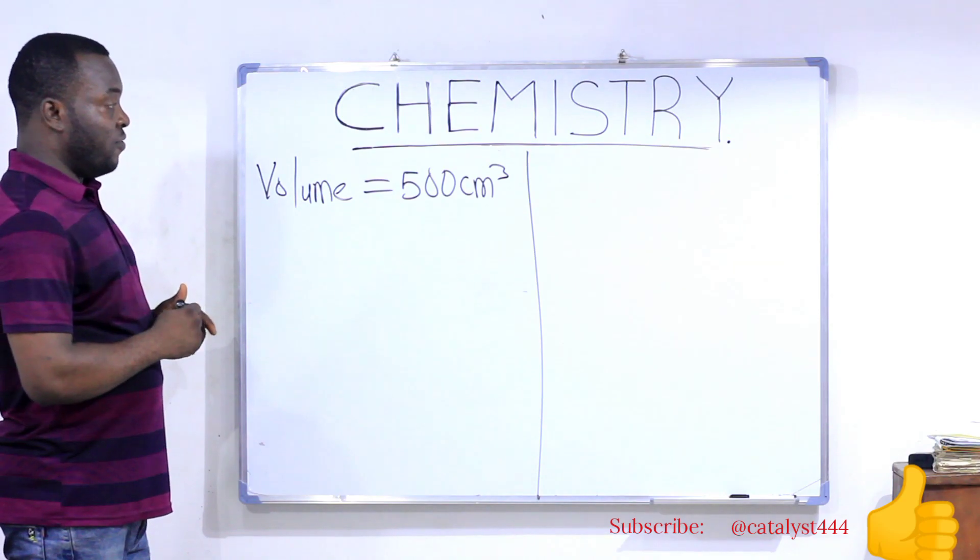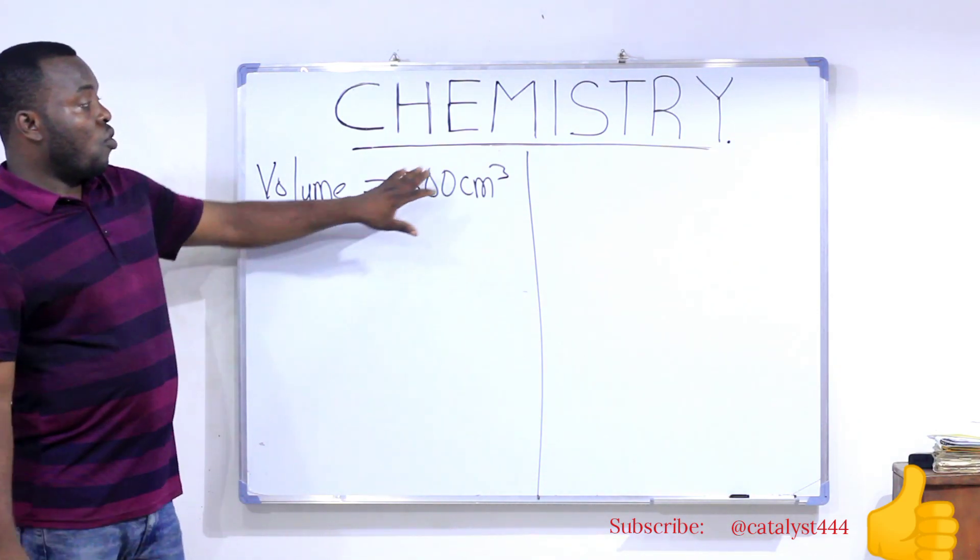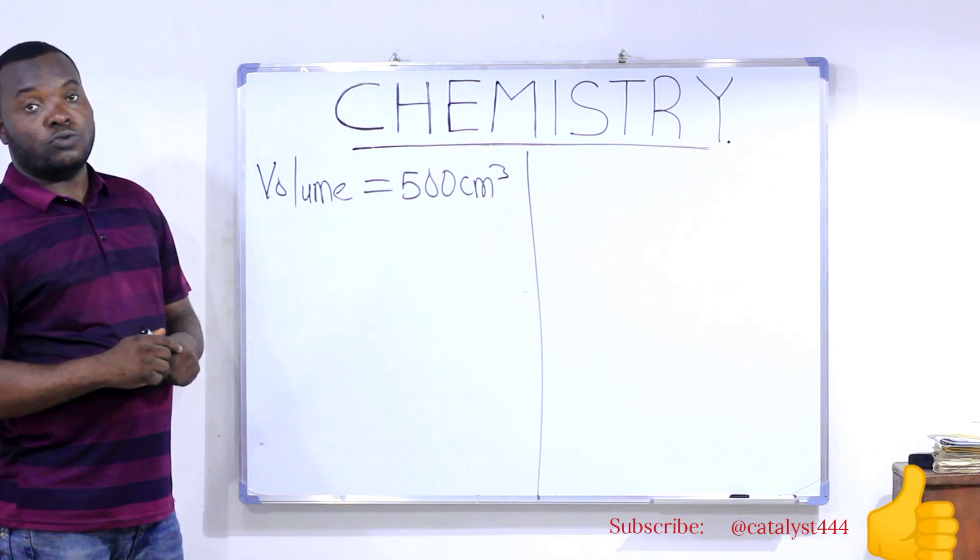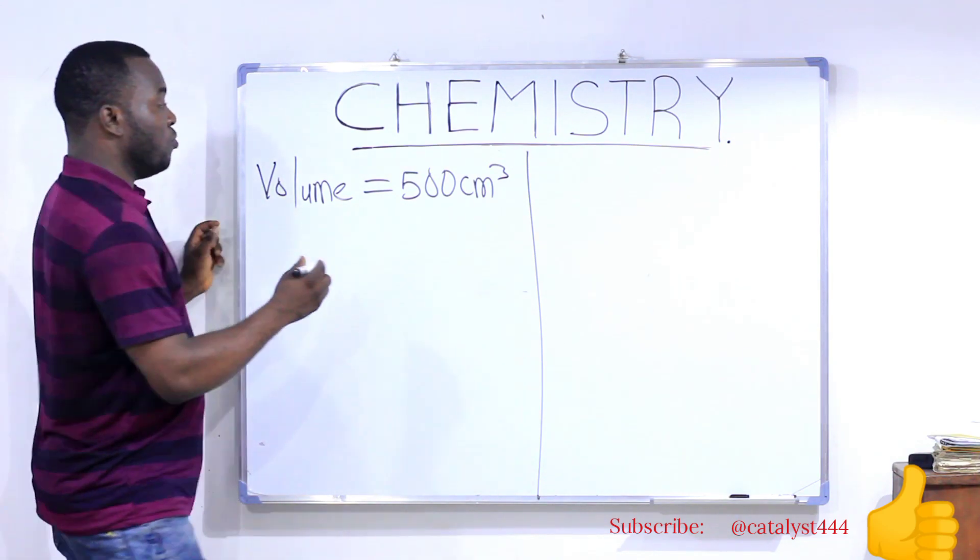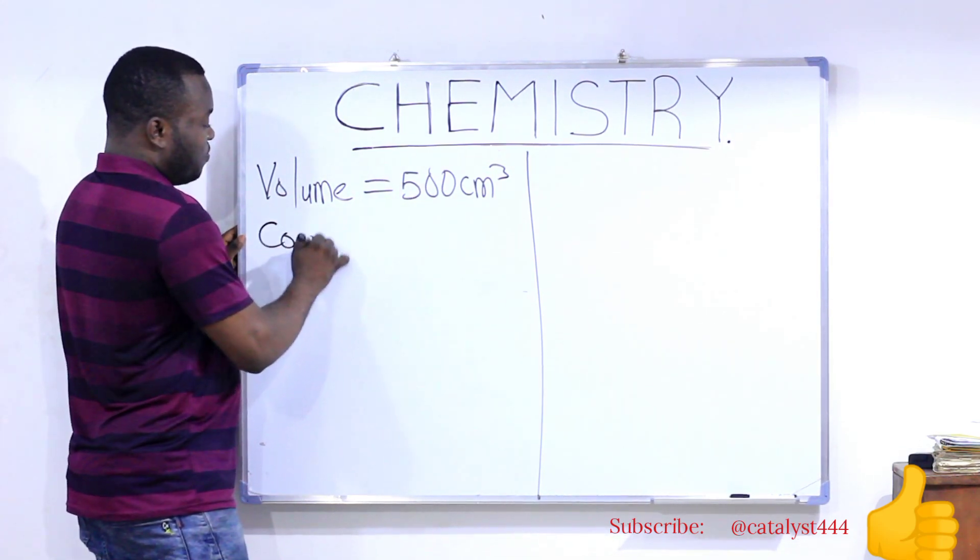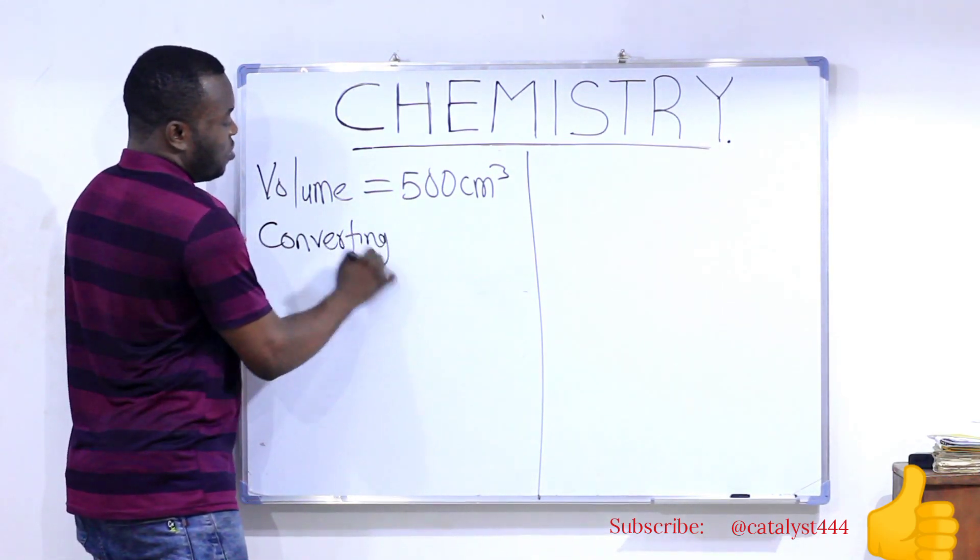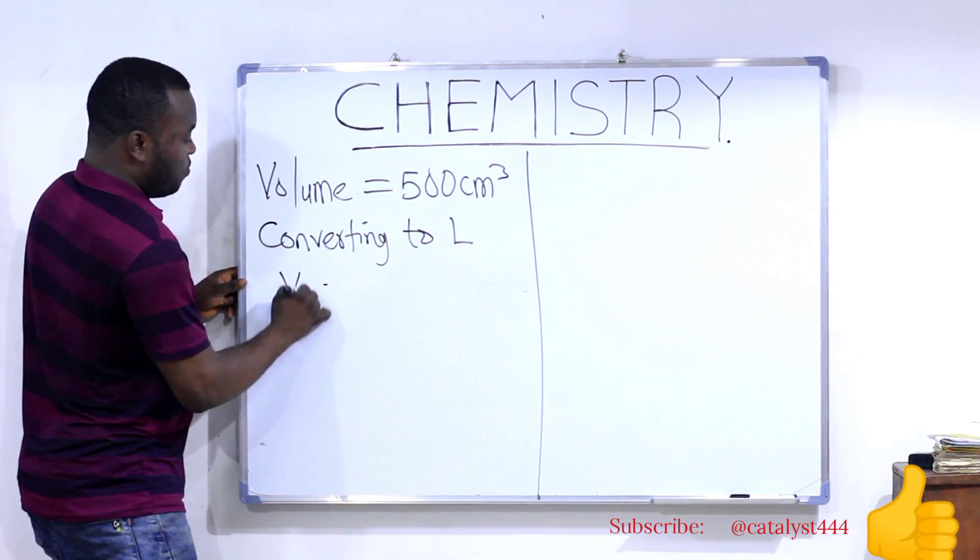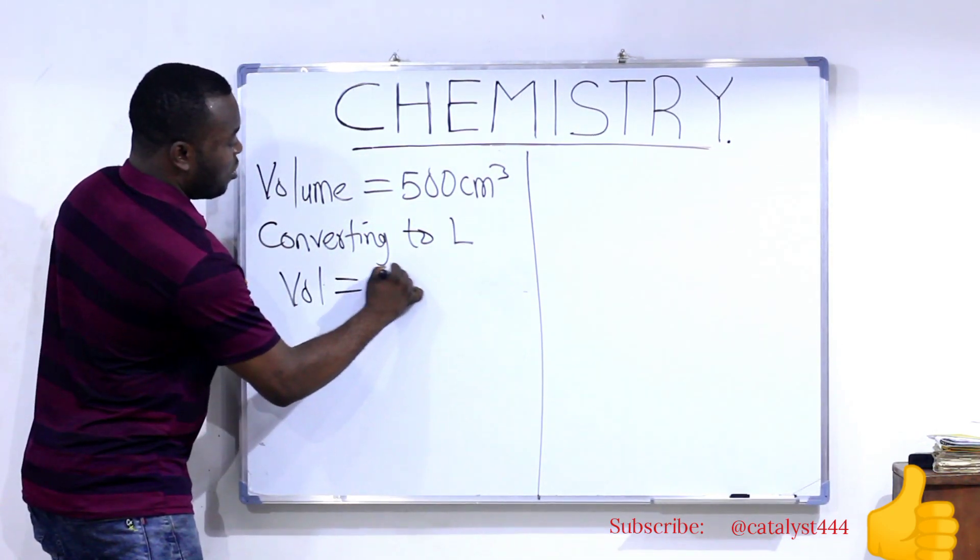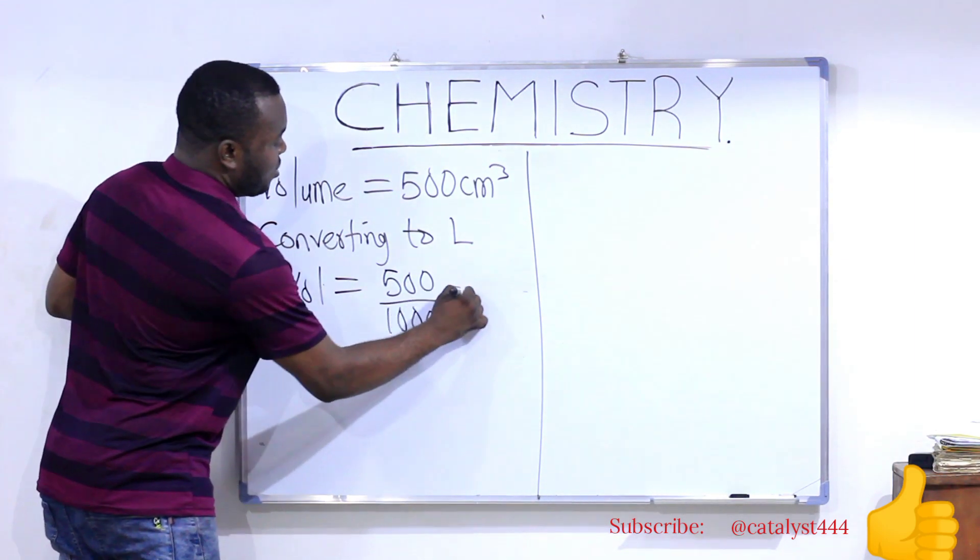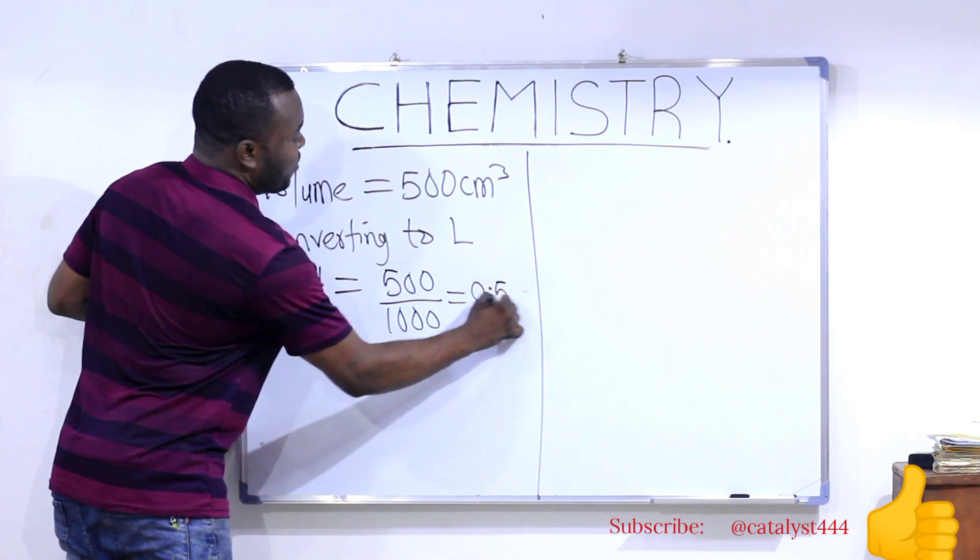Find out the mass given. But before then, convert the volume given to you to liter or dm³. Remember, liter is the same thing as dm³. So, I will convert to liter. Converting to liter will have our volume to be equal to 500 divided by 1000 and that gives us 0.5 liters.